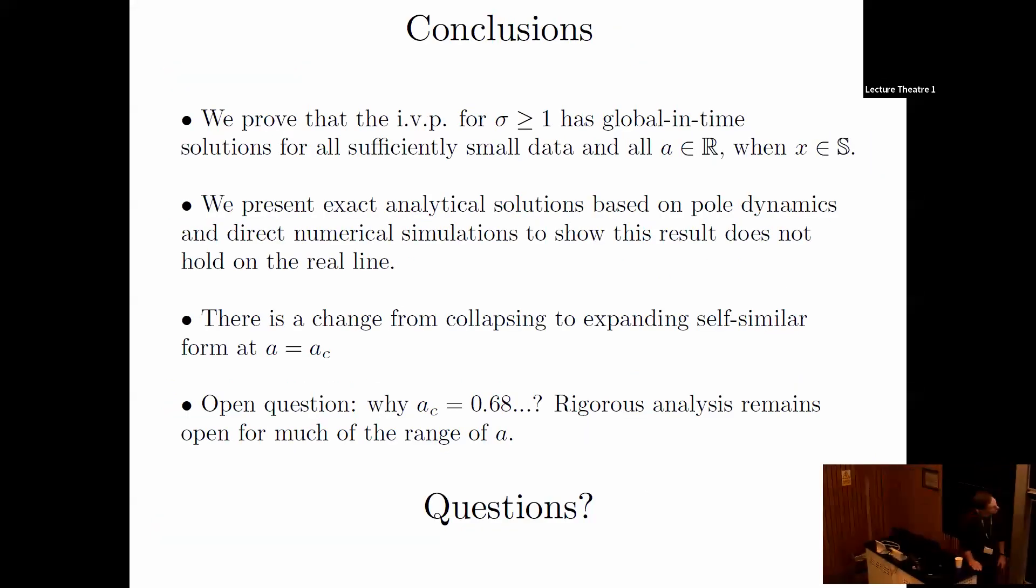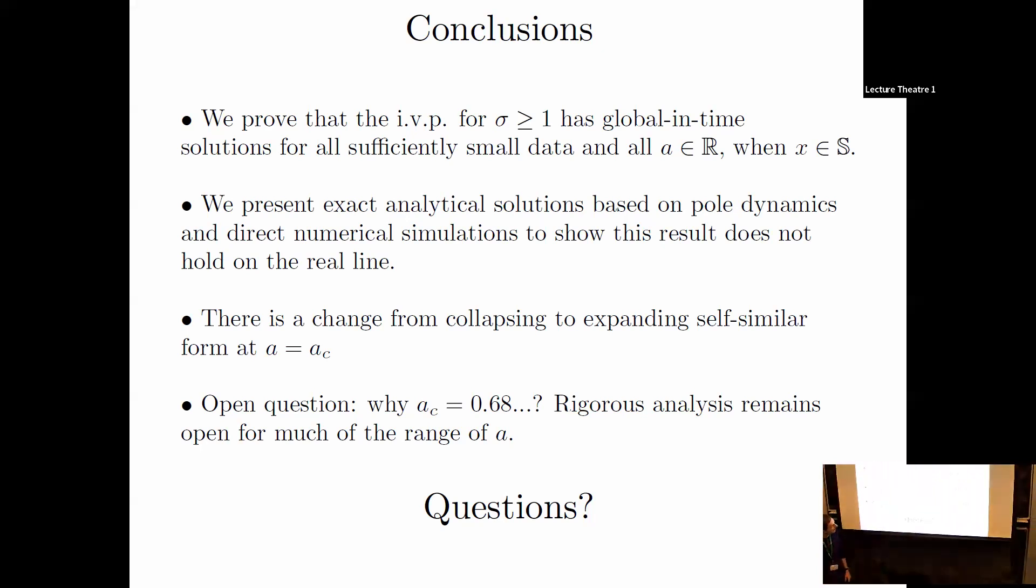That's it. I'll conclude by mentioning some open questions. One is: can we analyze this critical value where blowup changes from collapsing to expanding? That came out of numerics. I had this before I got the preprint from Huang, but basically, rigorous analysis remains open for any region where there's global existence. Nobody has shown global existence for large data—even that remains open. I'll stop there.